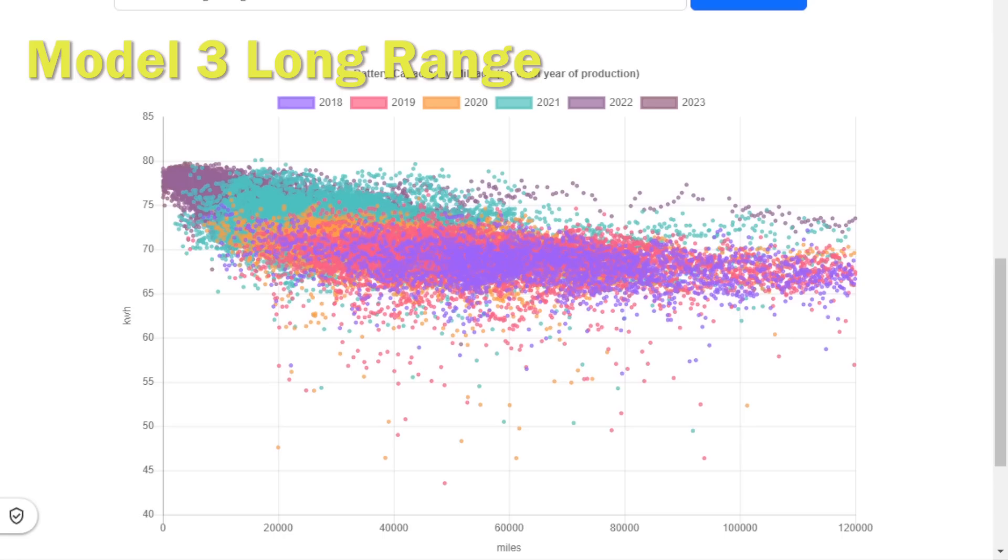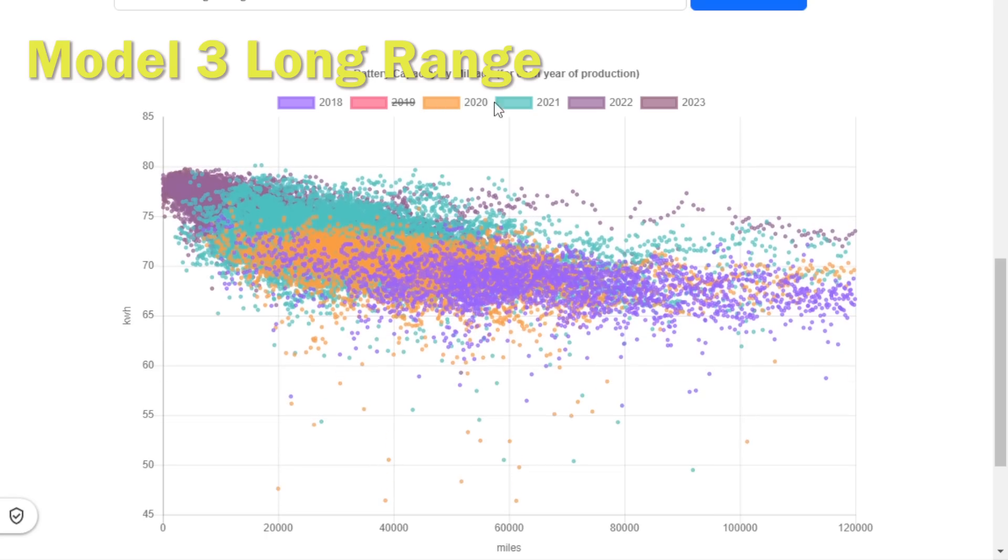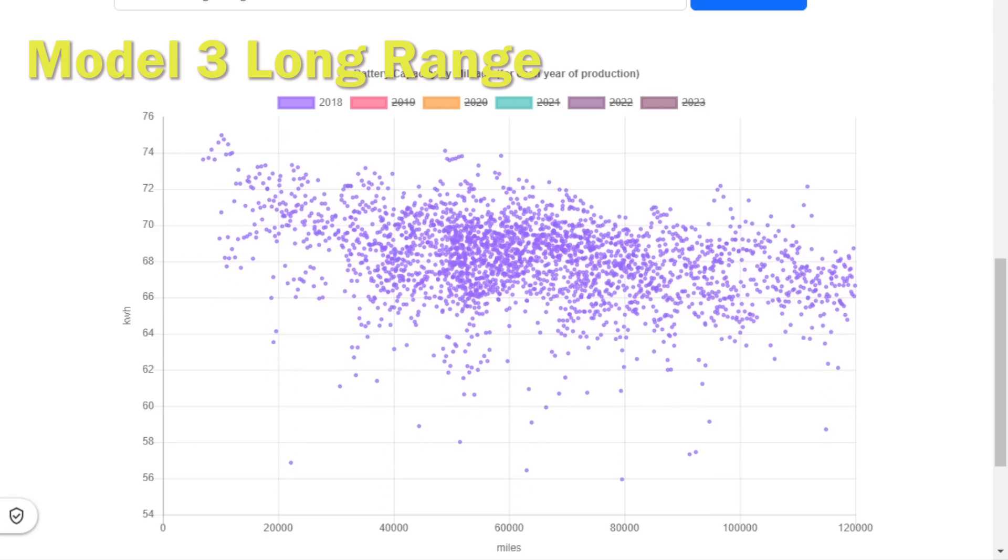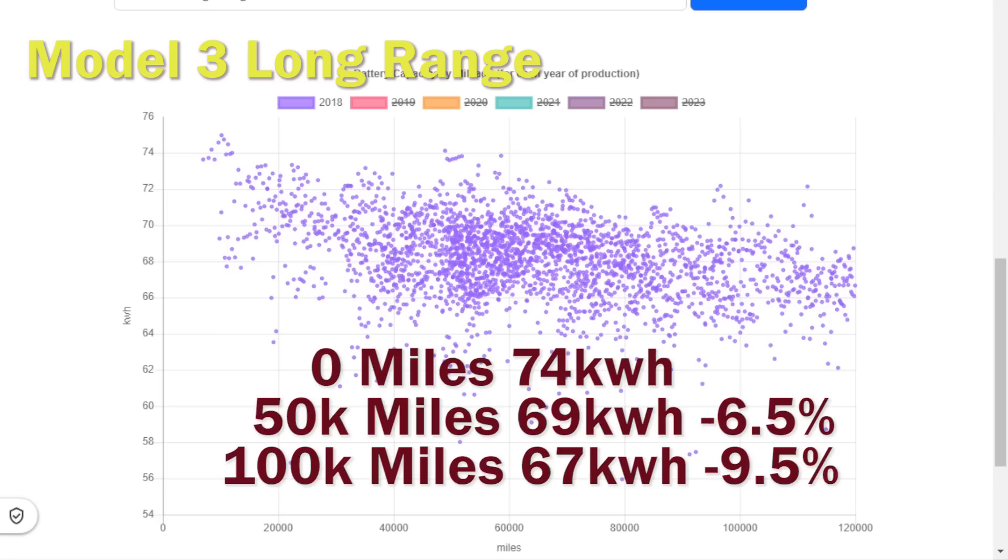The first battery we're going to look at is a Model 3 long range, and part of the thing with Tesla is the battery has actually changed over the years including by factory, so we're just going to focus on 2018 to start with. These batteries started with around 74 kilowatt hours as we can see, and by 50,000 miles most of the cars are reporting on average a drop to about 69 kilowatt hours, so that's around a 6.5 percent drop.